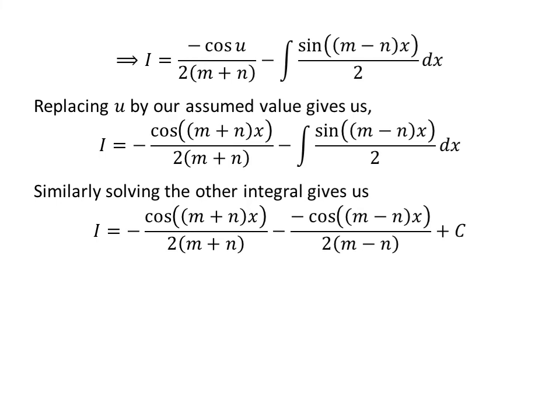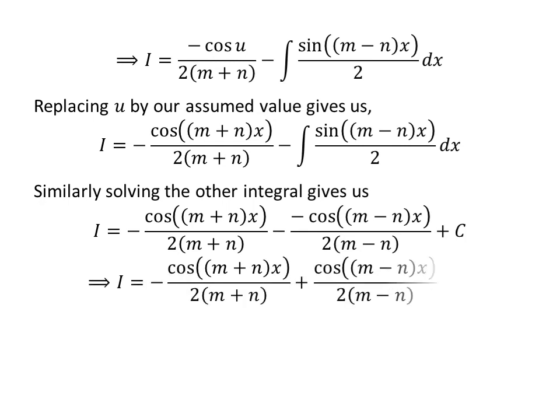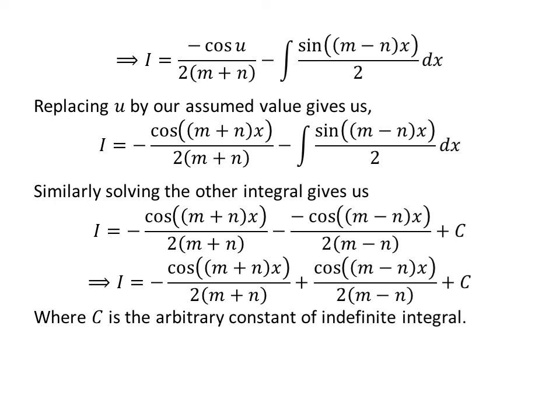Capital C is the arbitrary constant of the indefinite integral — never forget to add this constant at the end. Minus of minus is plus, so I is equal to minus cosine of m plus n times x upon 2 times m plus n, plus cosine of m minus n times x upon 2 times m minus n, plus capital C.